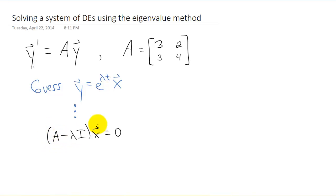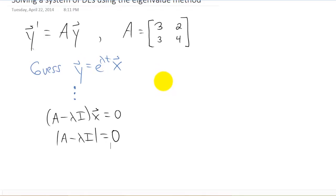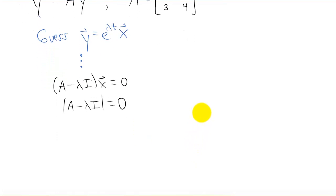And we discussed how at this point in the problem, the only way to get answers to this problem here that are non-zero is to require that the determinant of A minus lambda I equals zero. Now it's important to understand where this comes from, but when we're given a problem like this, we can actually start the problem right here. So we're going to start with the determinant of A minus lambda I.